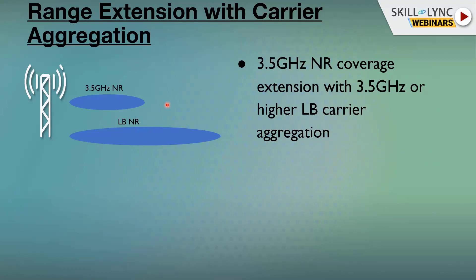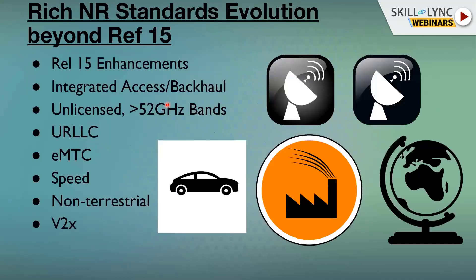Standards evolution beyond Release 15 is also relevant. Use cases like URLLC, machine type communications, and vehicle-to-vehicle communications are some of the standards evolutions we're seeing. DSS is just going to be a complement to some of these use cases, acting as a lever for enabling them in operator networks.